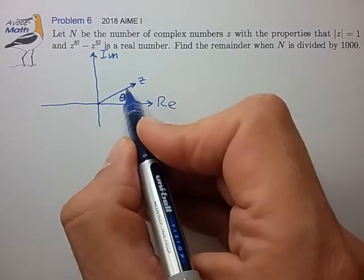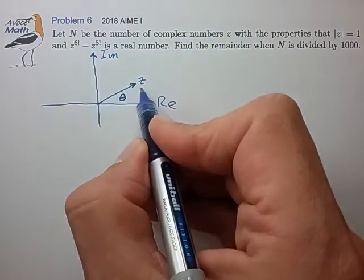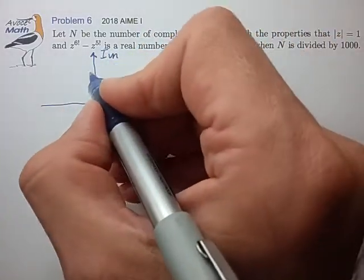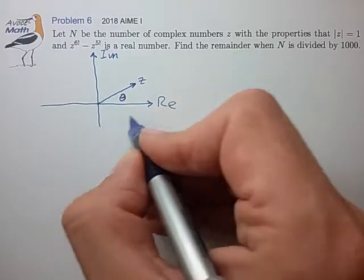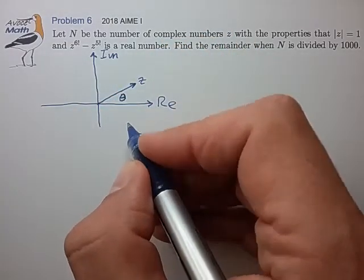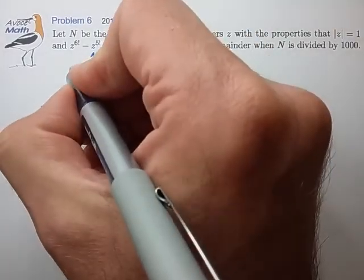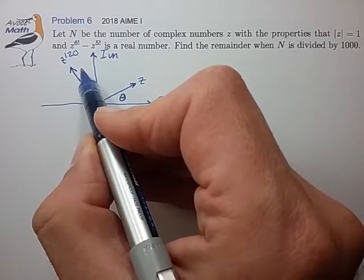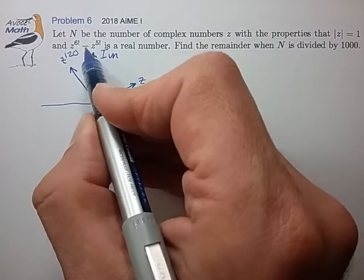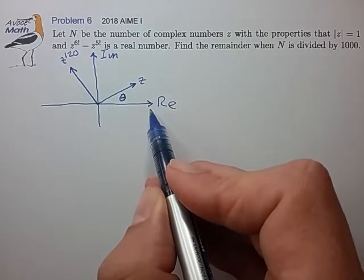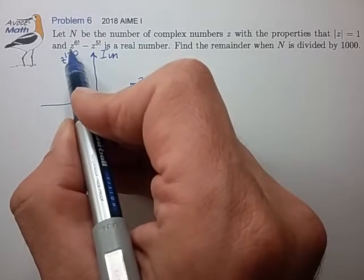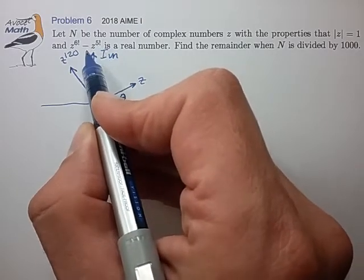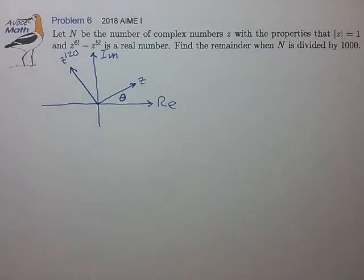We're trying to see what happens when we take z^120 and z^720. Let's look at z^120 and take theta, multiply it by 120. It'll wrap around the axis many times and should end up perhaps over here. That's z^120. We're trying to look for the condition where when we take z^720 and subtract it from z^120, we'll end up with a real number. So equivalently, that means the imaginary part of z^(6!) has to match the imaginary part of z^(5!).